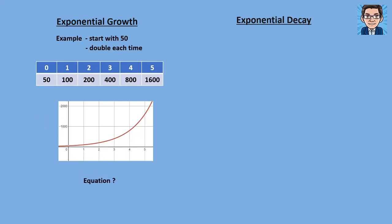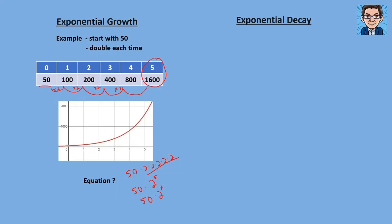What about the equation for this example? So we started with 50 and we multiplied by 2, multiplied by 2, multiplied by 2 each time — five times we multiplied by 2. So to get to 1,600 we did 50 times 2 times 2 times 2 times 2 times 2, which is another way of writing 50 times 2 to the fifth power. More generically, this is going to be 50 times 2 to the x power, where x is the number of times that we doubled.